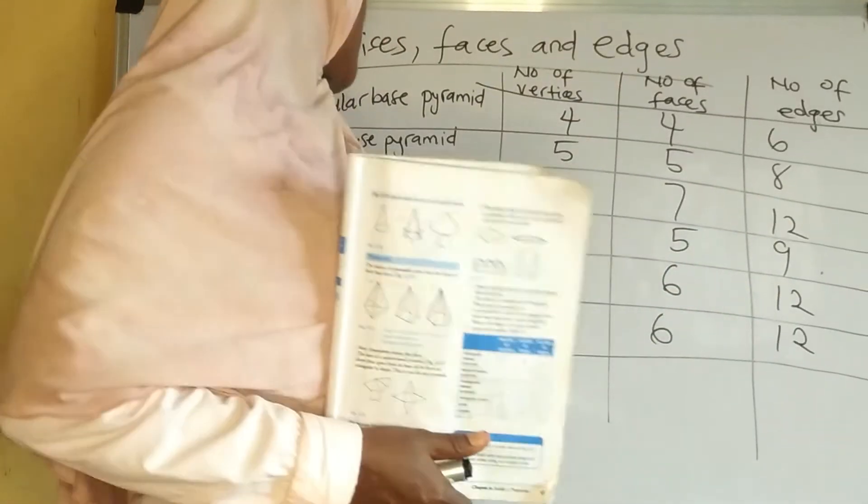For the triangular-based pyramid, we want to look at the number of vertices. Vertices are those corner points. The vertices are four altogether — let's see: one, two, three, four. So there are four vertices. Now let's look at the number of faces. It has three faces by the side and then the base itself is another face, making four faces. Then the edges: one, two, three, four, five, six — the edges are six.